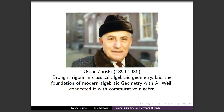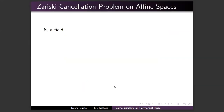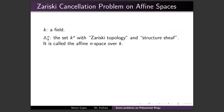Now I come to the Zariski Cancellation Problem. Oscar Zariski was one of the founders of modern algebraic geometry — he brought rigor to classical algebraic geometry and laid its modern foundations with André Weil, connecting it with commutative algebra. Here, k is a field and 𝔸ⁿₖ is the set kⁿ of n-tuples of elements from k with the Zariski topology and a sheaf structure — this is the affine n-space over k.